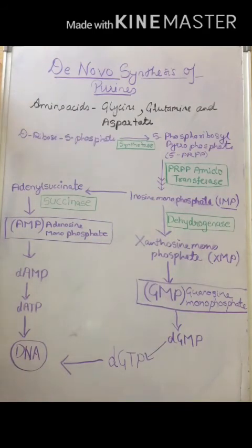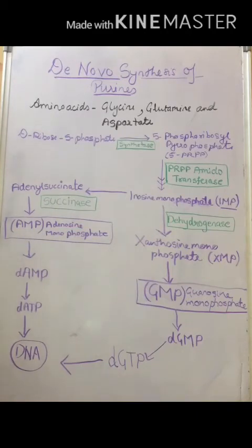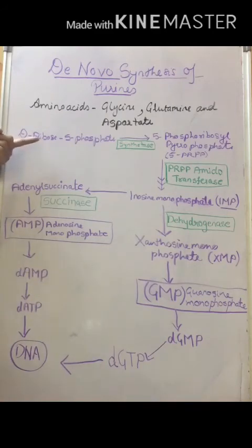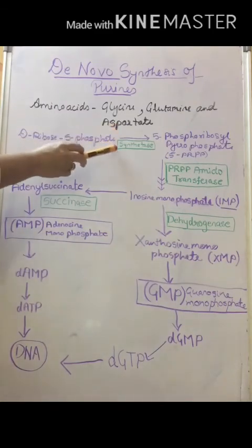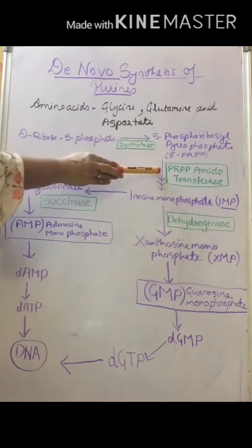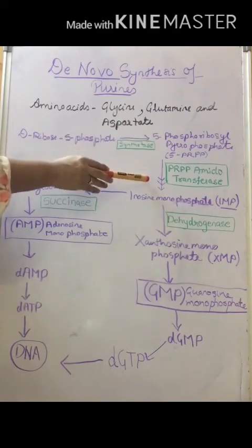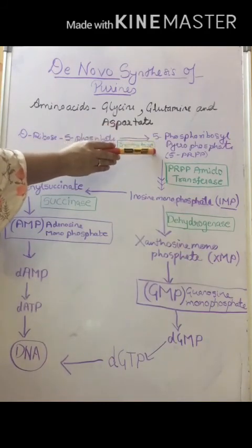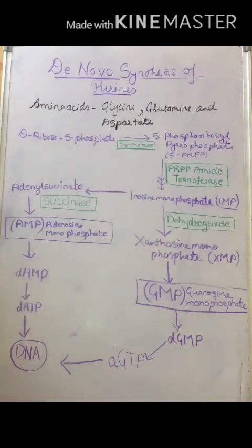The de novo synthesis of purines requires amino acids such as glycine, glutamine, and aspartate, which utilize ribose-5-phosphate and 5-phosphoribosyl pyrophosphate (PRPP) to form inosine monophosphate (IMP) — an important precursor for adenosine monophosphate and guanosine monophosphate. D-ribose-5-phosphate is converted to PRPP by the enzyme synthetase, and then the enzyme PRPP amidotransferase catalyzes the conversion of PRPP through a series of reactions — where these amino acids form the purine nucleus — ultimately yielding IMP.